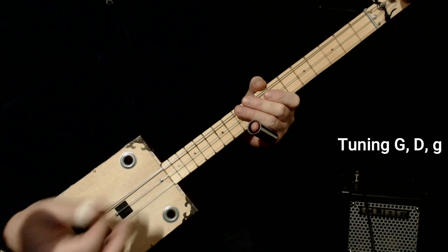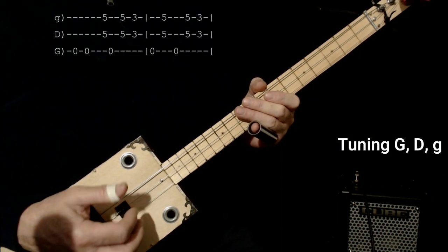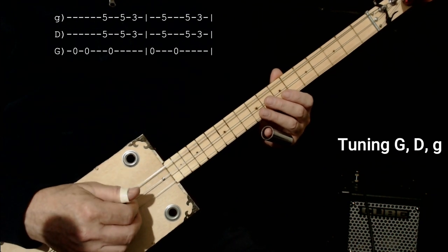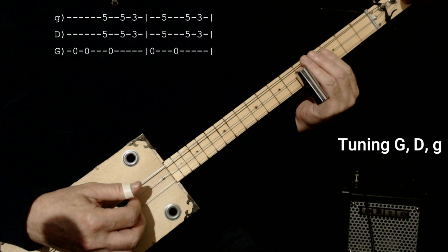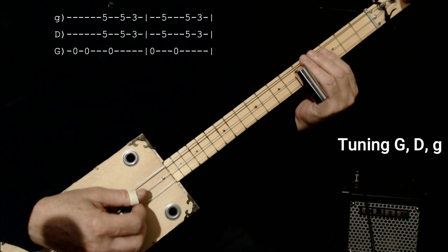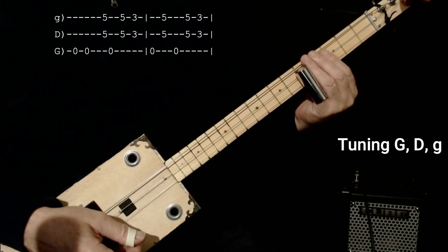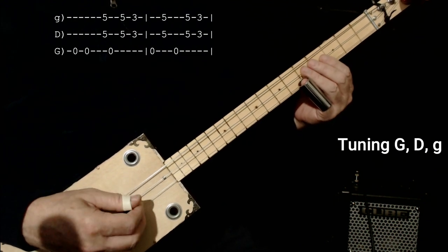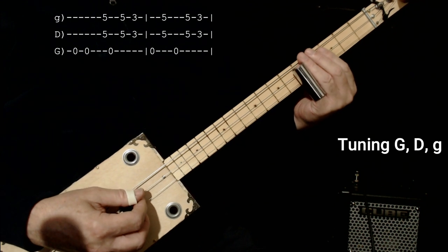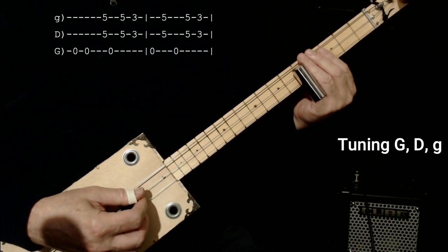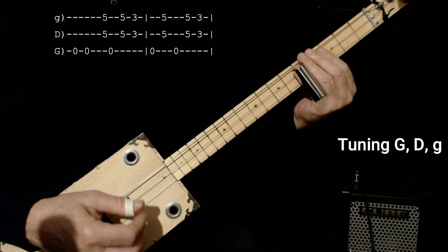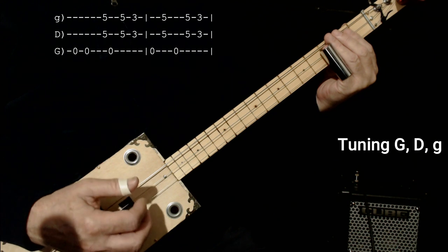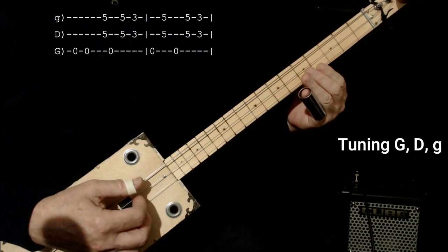Alright, so I'm just using a thumb pick today but you can use a pick or your fingers. For the first lick you hit the low string twice. Then you go up to the fifth fret on the middle and the high string and you hit that once. Then you go back, hit the low string once. Then you go back to the two fives in the middle and the high string and you hit that. And then you go down to three. That's kind of half of the main lick.